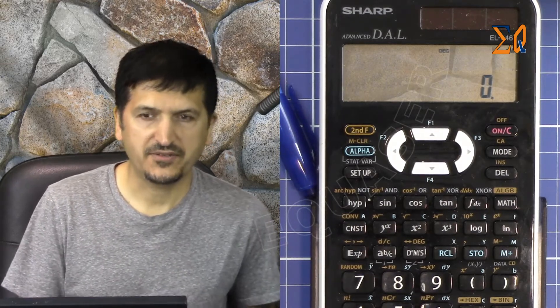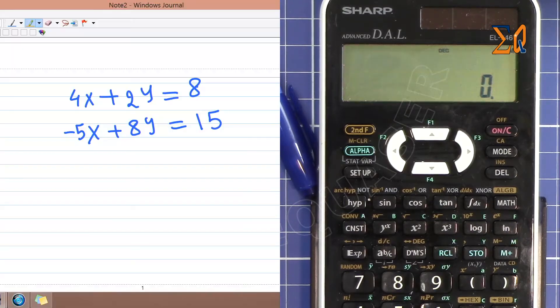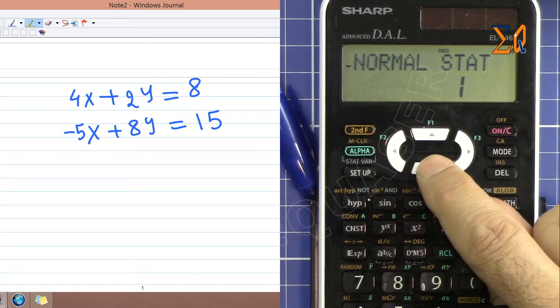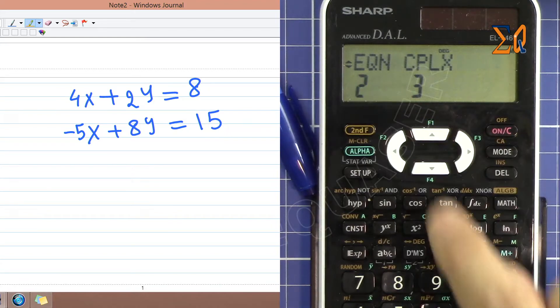Let's have a look. We have here 4X plus 2Y equals 8 and also minus 5X plus 8Y equals 15. To do simultaneous equations, press mode, scroll down, press 2 for equation.